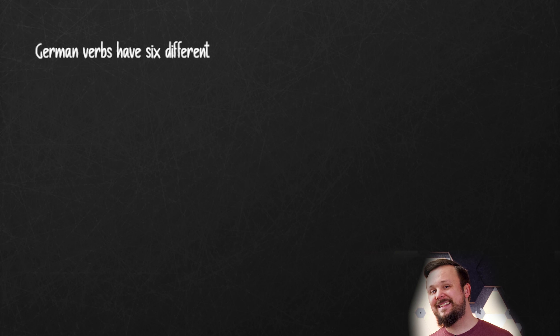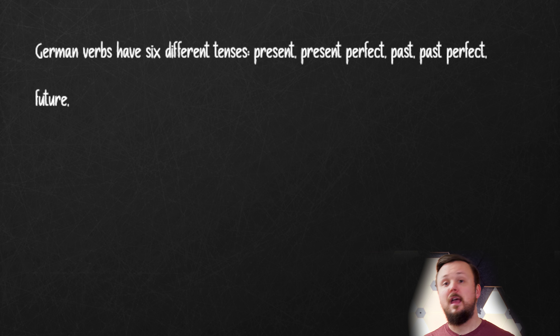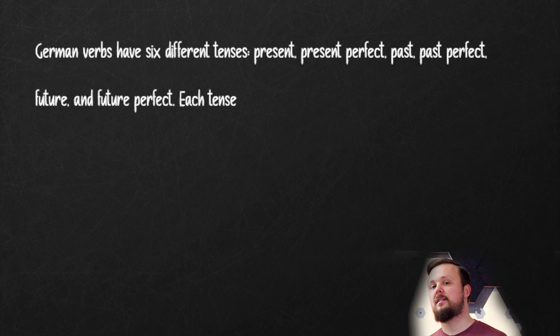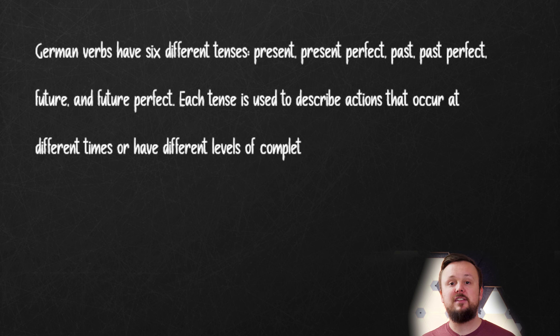German verbs are divided into regular and irregular verbs. Regular verbs follow a predictable pattern in the way they are conjugated, while irregular verbs have a unique conjugation pattern that must be memorized, unfortunately. German verbs have six different tenses: present, present perfect, past, past perfect, future, and future perfect. Each tense is used to describe actions that occur at different times or have different levels of completion.